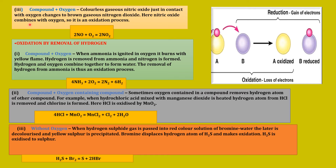Under oxidation by combination of oxygen, the third type is compound plus oxygen. See the example: NO plus O₂ gives formation of NO₂. NO is nitric oxide and NO₂ is nitrogen dioxide. Colorless gaseous nitric oxide, just in contact with oxygen, changes to brown gaseous nitrogen dioxide. Here nitric oxide combines with oxygen, so it is an oxidation process — oxidation occurs from NO to NO₂ because the number of oxygen atoms in the compound is increasing.